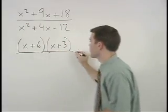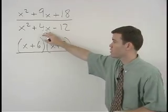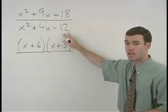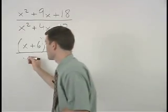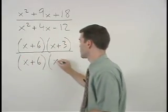In the denominator, we're looking for factors of negative 12 that add to positive 4, which are positive 6 and negative 2. So we have x plus 6 times x minus 2.